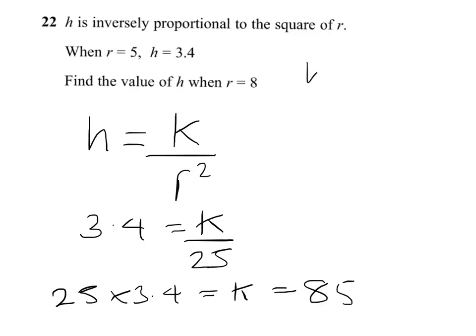So, we know then that h equals 85 over r squared. Now, if r equals 8, then h will equal 85 over 8 squared. So, h equals 85 over 64.